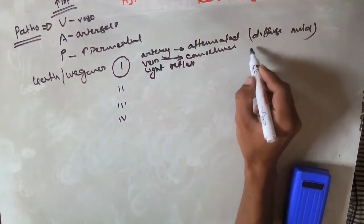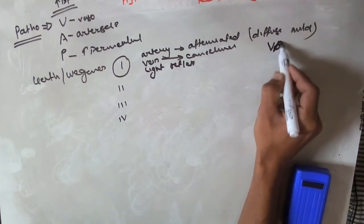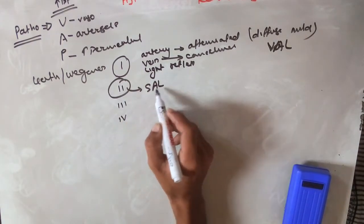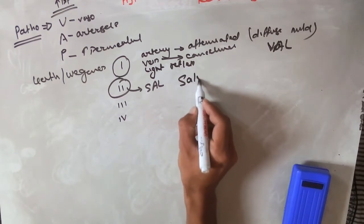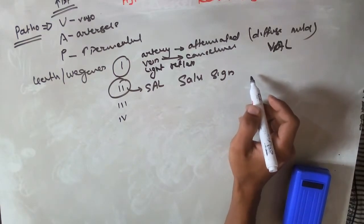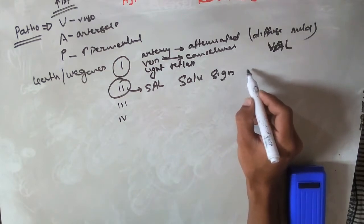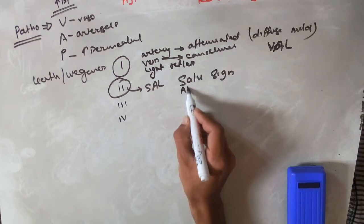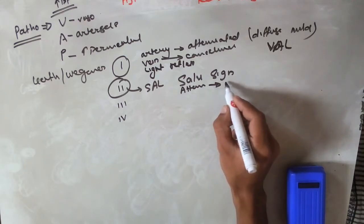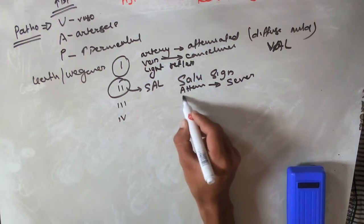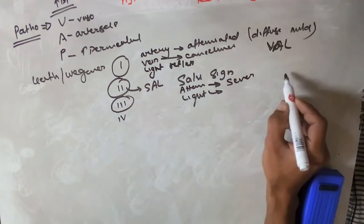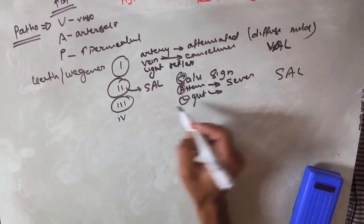Grade two is remembered by the mnemonic SAL: S for saluting sign, which is deflection of the vein at the AV crossing; A for attenuation, meaning a larger degree of narrowing; and L for light reflex, which is exacerbated in grade two.